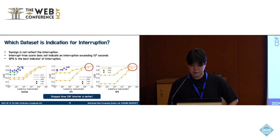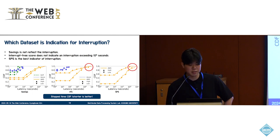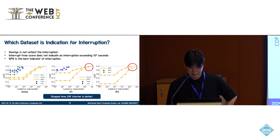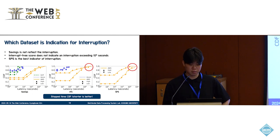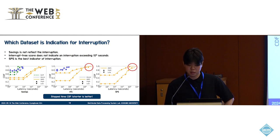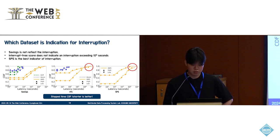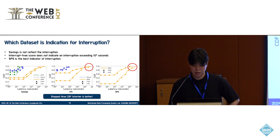We then analyzed the distribution of stopped time depending on the Spot dataset. This figure represents the CDF distribution of stopped latencies, where stopped latency is the non-running time after an interruption, and shorter latency is better. Savings do not reflect interruption for any vendor. IFS of AWS indicates interruption, but Azure does not, and IFS of AWS does not indicate interruption beyond 10,000 seconds. However, SPS indicates interruption regardless of time, making SPS the best indicator of interruptions.